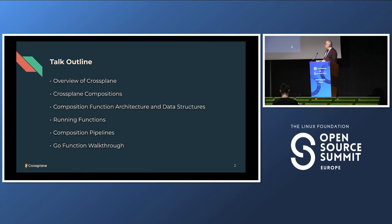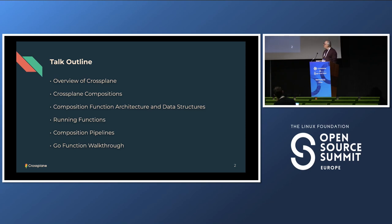In this talk, we're going to first briefly discuss Crossplane itself, the project, if you're not familiar with it. Then we'll talk about something called compositions, which is a way of making more complex infrastructure. Then we'll get into the architecture and design of functions, how to run them, and we'll have a Go walkthrough where I'll show you how to write a function in Go — with some coding at the end.